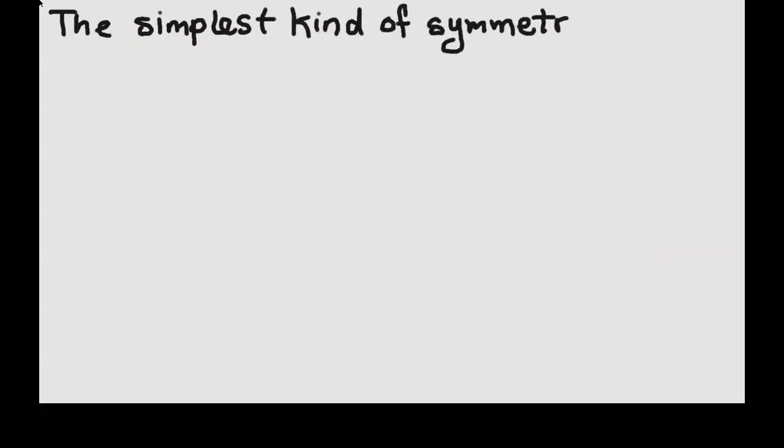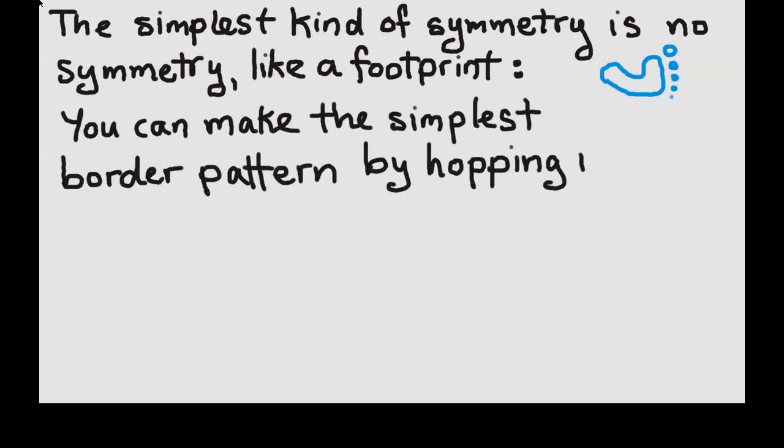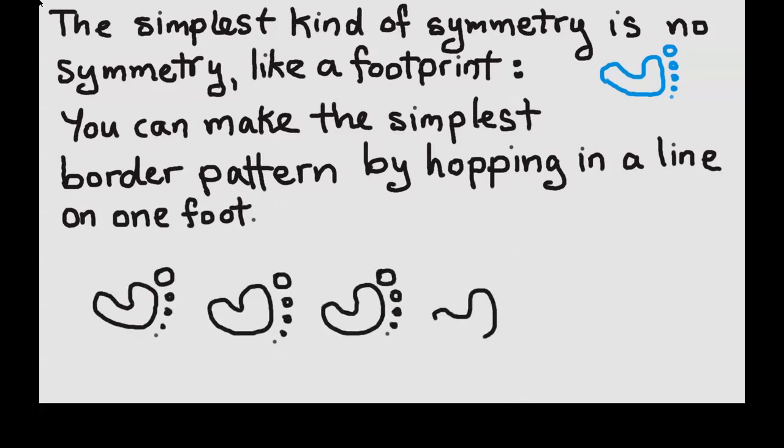The simplest kind of symmetry is no symmetry at all, or what mathematicians like to call trivial symmetry. That can be represented by something like a footprint. You can make the simplest border pattern by hopping on a line on one foot. Here's my little drawing of footprints by hopping on one line.